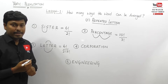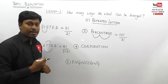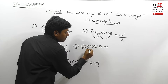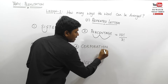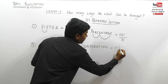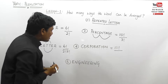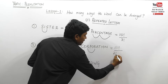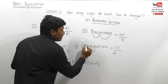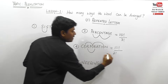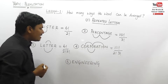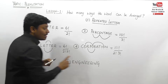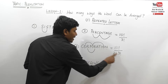Fourth example: how many ways can the word CORPORATION be arranged? Count the letters — one, two, three, four, five, six, seven, eight, nine, ten, eleven — so eleven factorial. Now check repeated letters: R is repeated two times, so two factorial; O is repeated three times, so three factorial. The final answer is eleven factorial divided by two factorial and three factorial, where two factorial is for R and three factorial is for O.